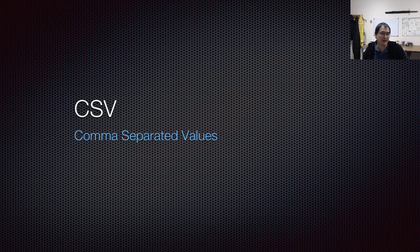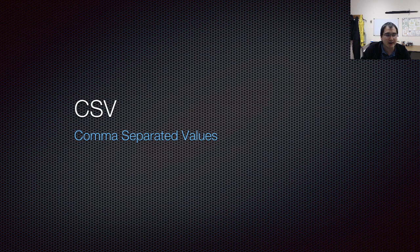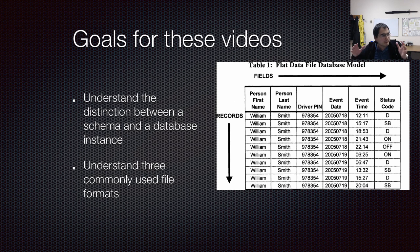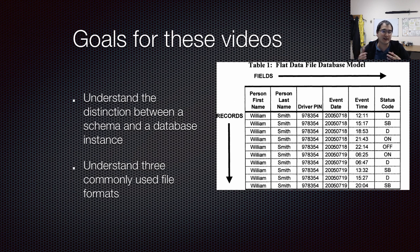We'll start with the easiest ones and work our way to the more complicated ones. I want to start by talking about CSV, or comma-separated values. One of the big things I want you to take away from this part of this week's lectures has to do with what a schema is and what an instance is.